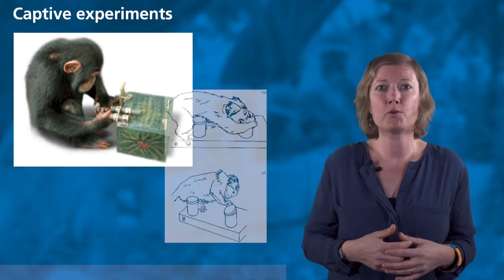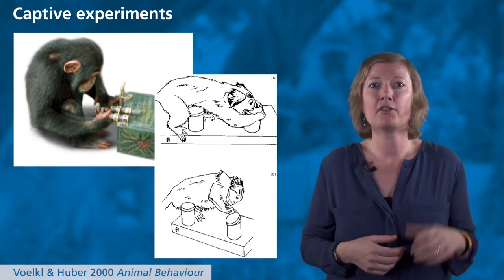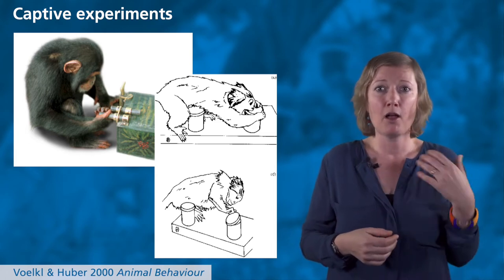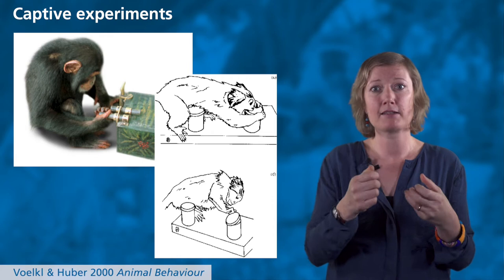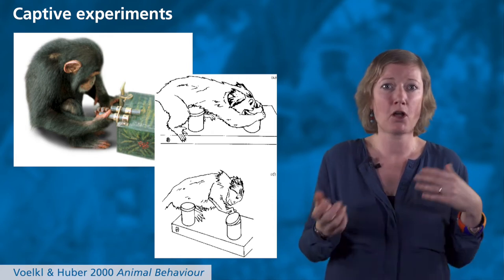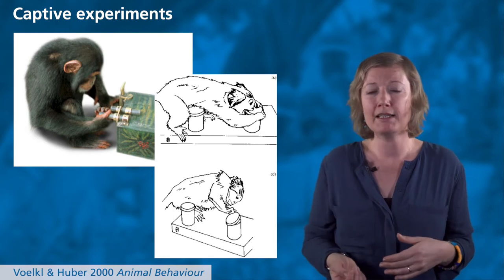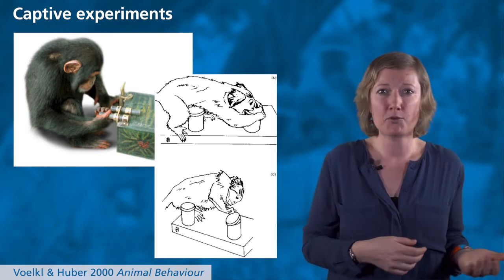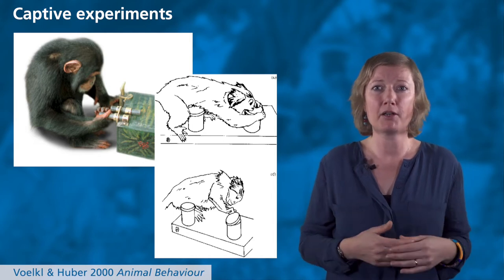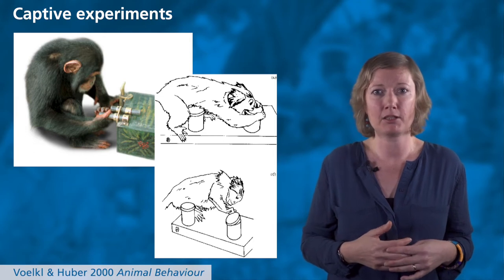Another experimental setup was used in marmosets, using a little cylinder containing a food reward. Researchers trained models to open it with their mouths or with their hands. Then the experiment took place in a dyadic context, with a model showing one of two opening techniques, and when the naive observers manipulated the cylinder, they found bodily matching of the body part used to open the task, known as bodily imitation.